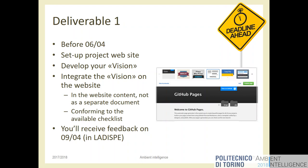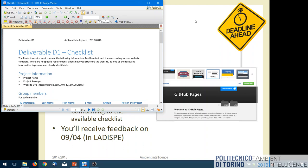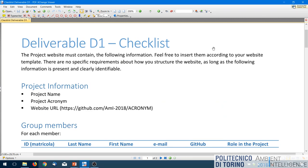We want to see a website organized however you like — one page, different pages, one column, two columns — do what you want. We will check whether the required information is present somewhere on the website and easy to read. The information required is listed in a checklist published on the course website under the exam section.